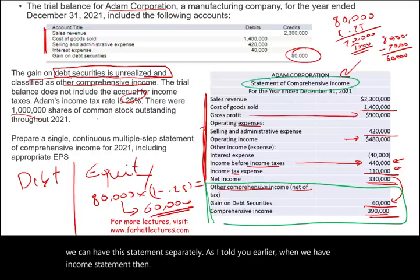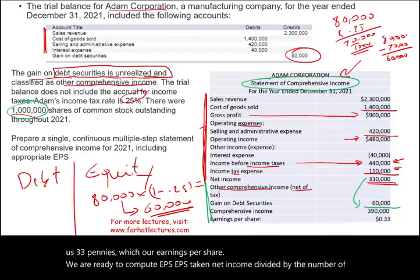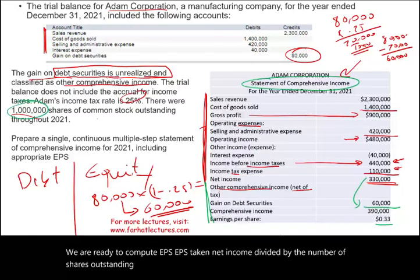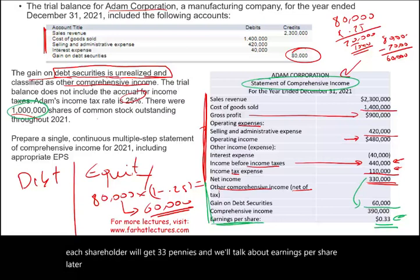We are also ready to compute earnings per share (EPS). EPS is net income divided by the number of shares outstanding — $330,000 divided by 1 million shares — which equals $0.33 per share. In theory, each shareholder earns 33 cents. We will discuss earnings per share in much more detail later on.